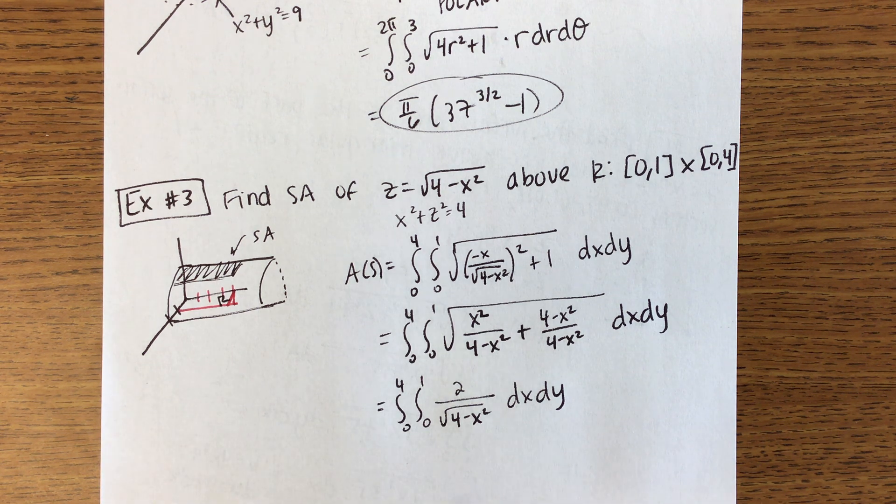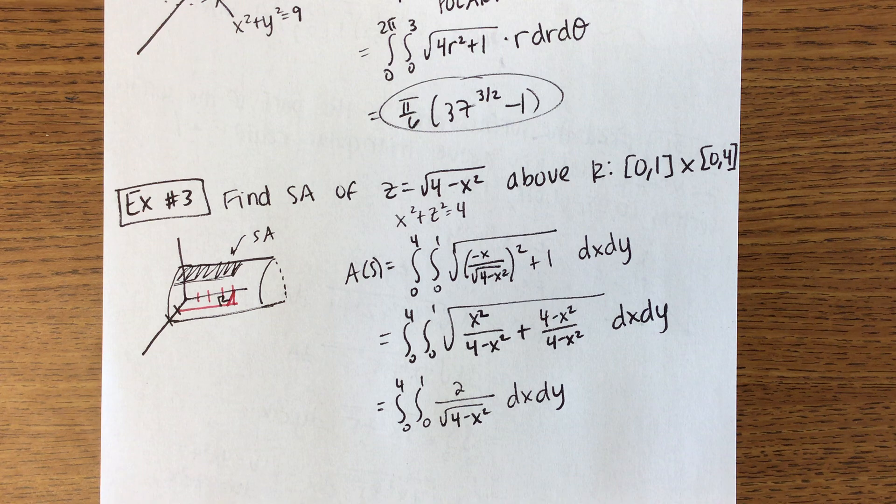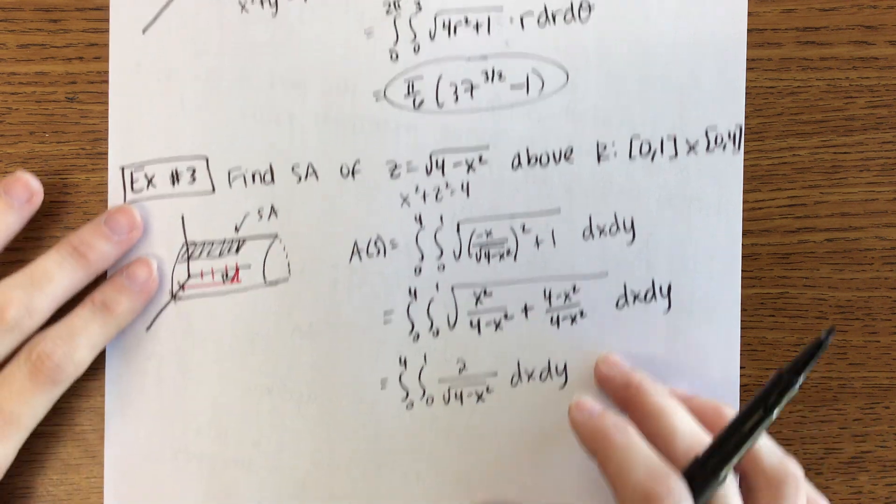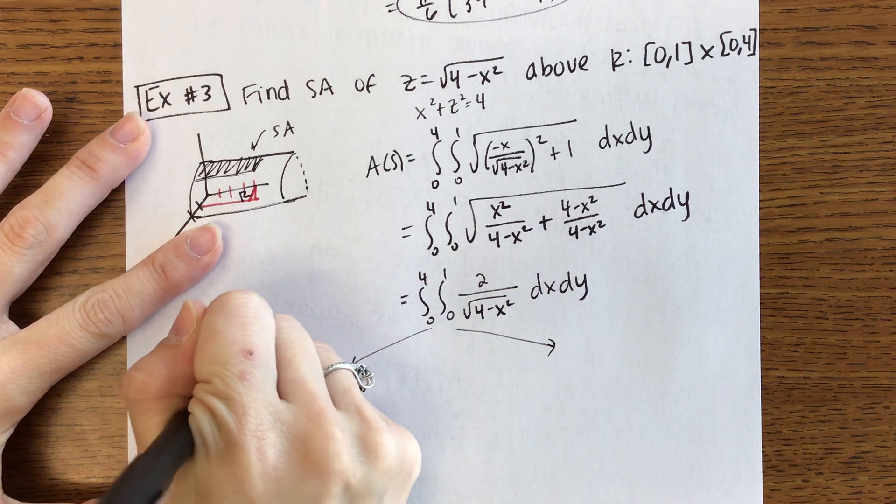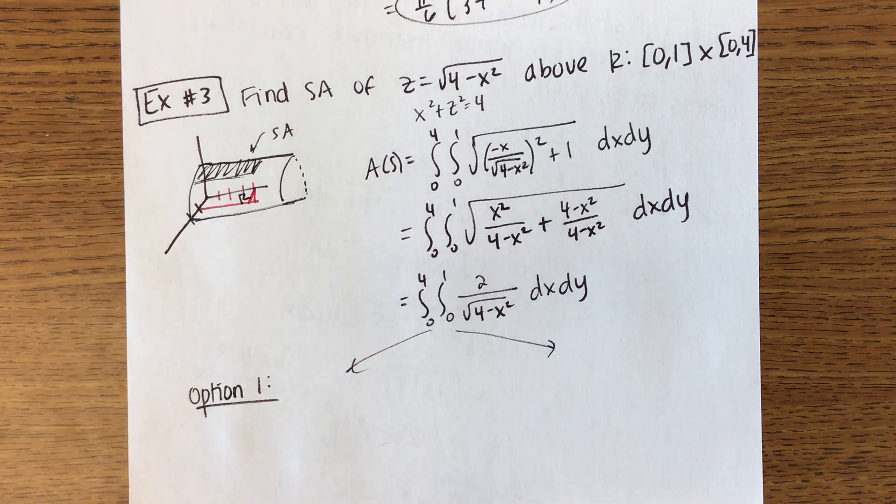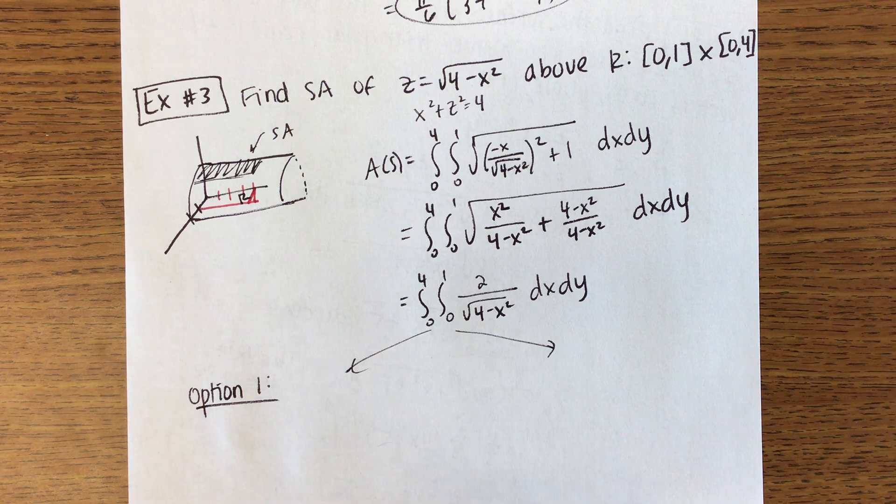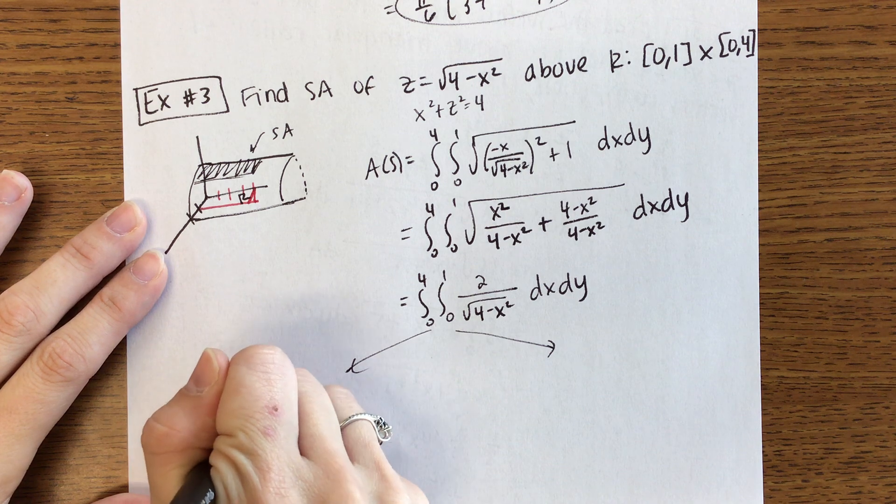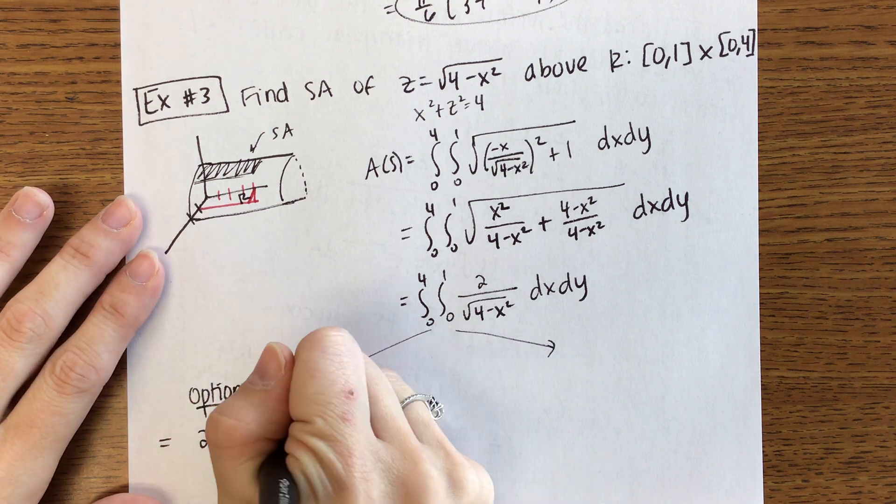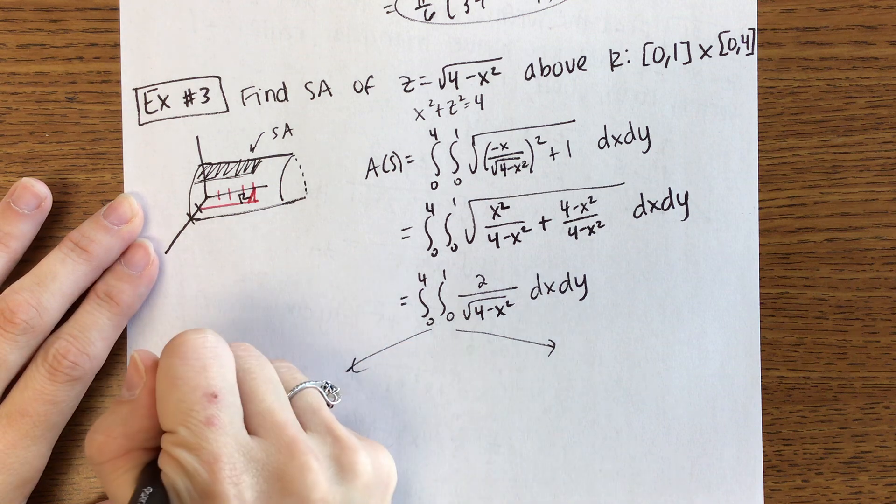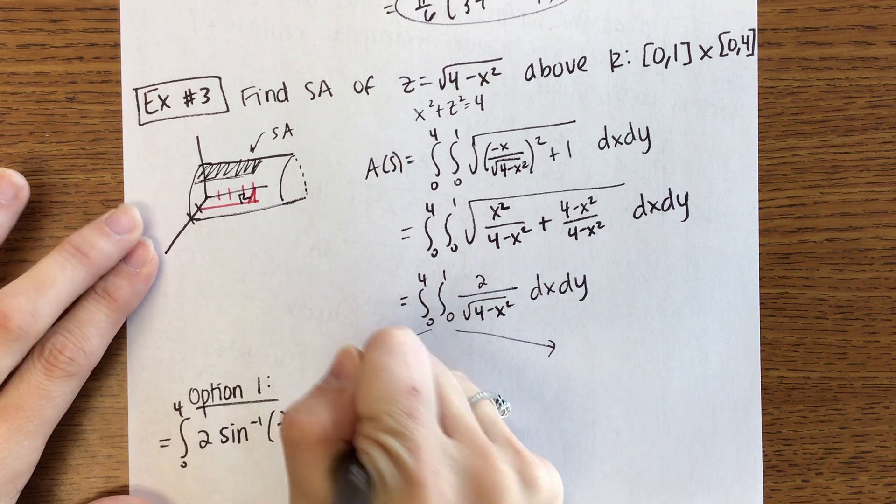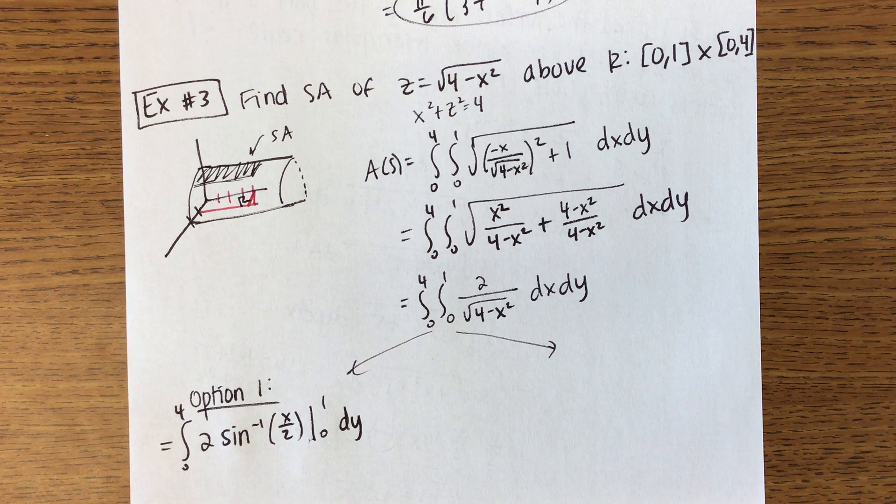Okay. Reason I wanted to do this problem is I don't know if we remember how to integrate this. Okay there are two options. First option is if you remember all of your trig, trig integrals. So like Brian said this is inverse sine. So this will be 2 inverse sine of X over 2. We're evaluating that from 0 to 1 and then we still have to take the integral of 0 to 4 for dy. That's option 1.